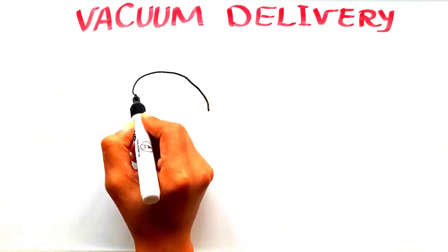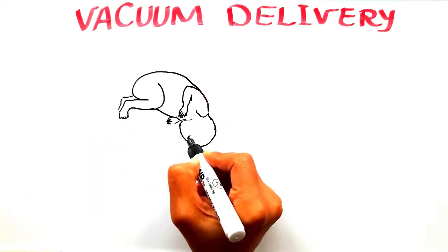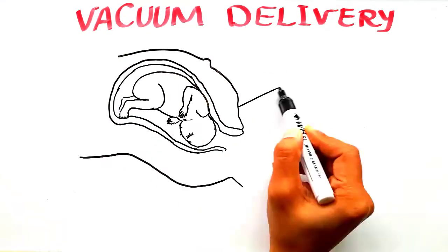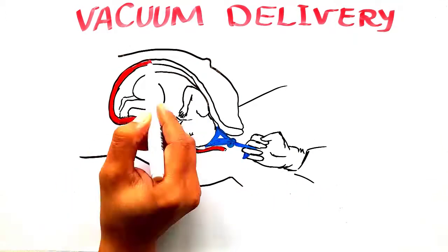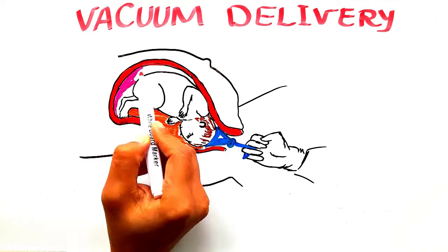Vacuum extraction. This type of delivery technique is used in the case of a vaginal birth. The baby is on its way out, but somehow has stopped moving any further through the canal.